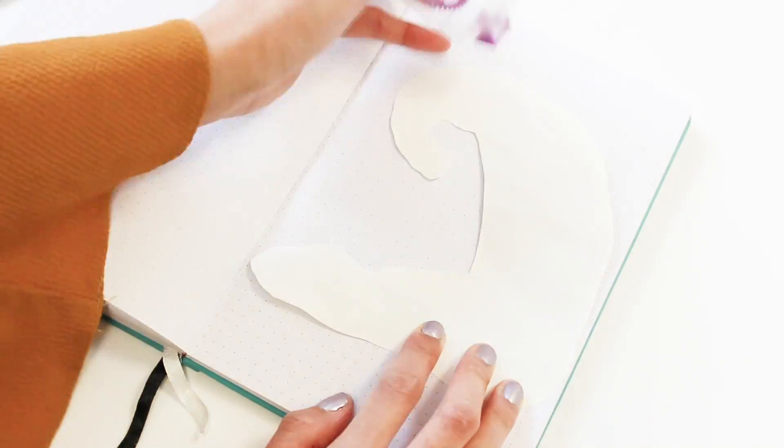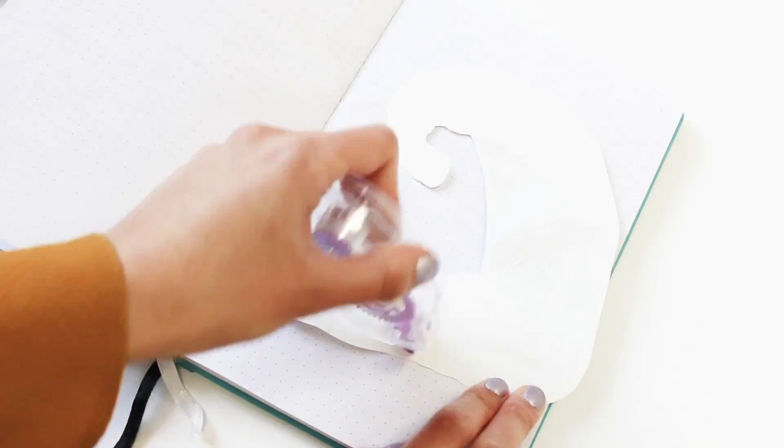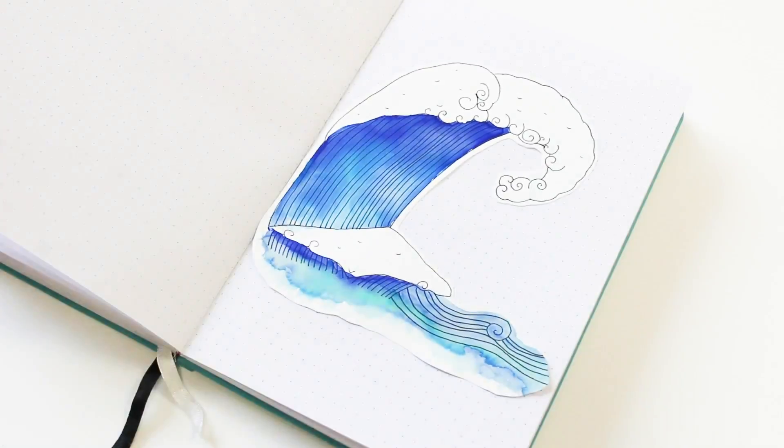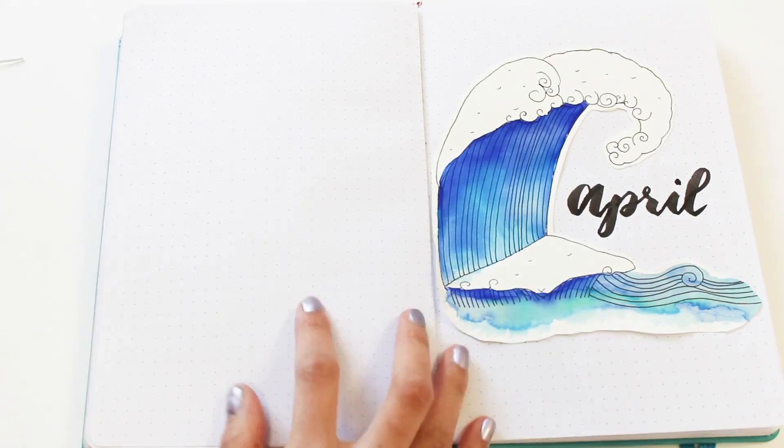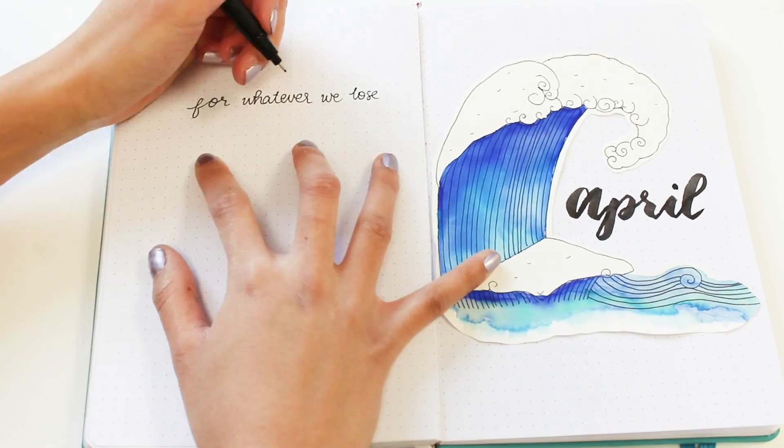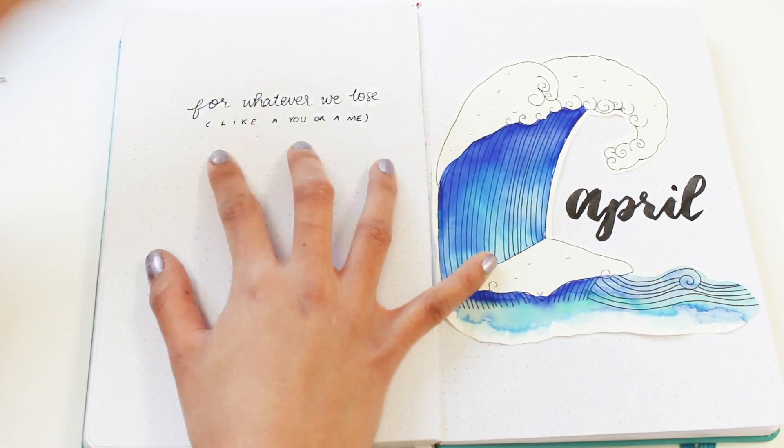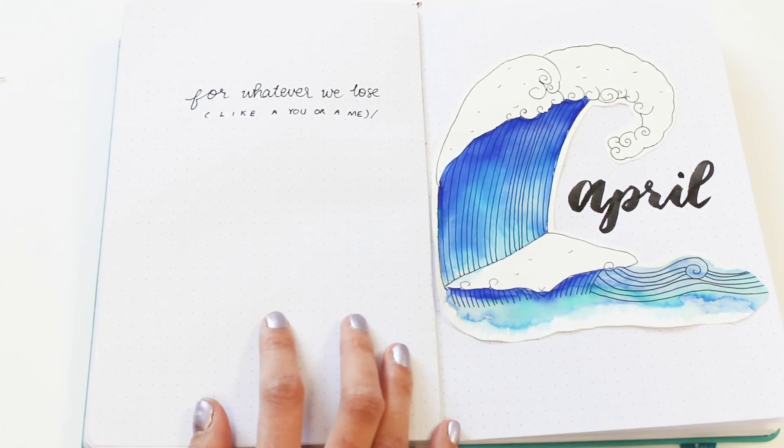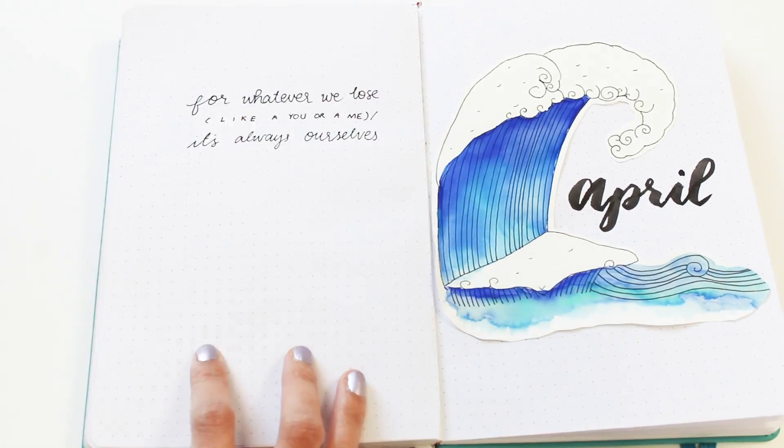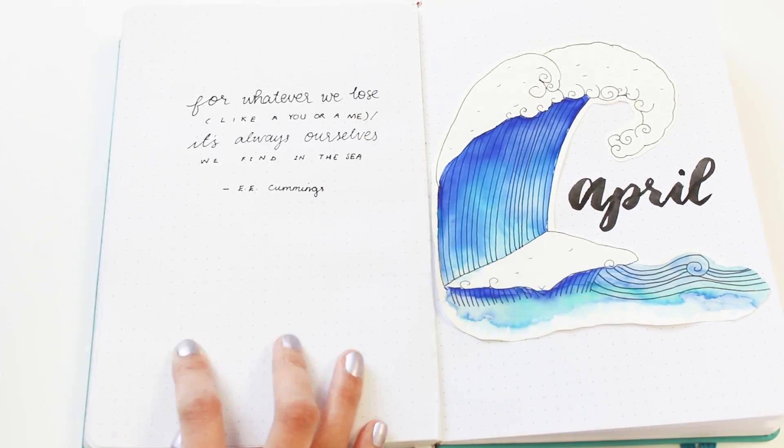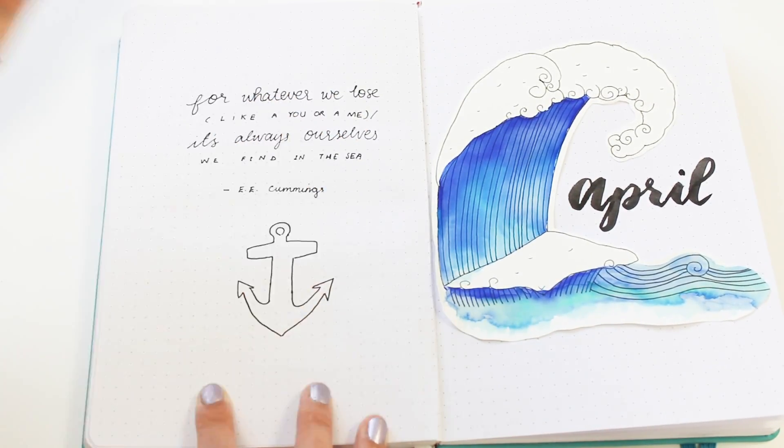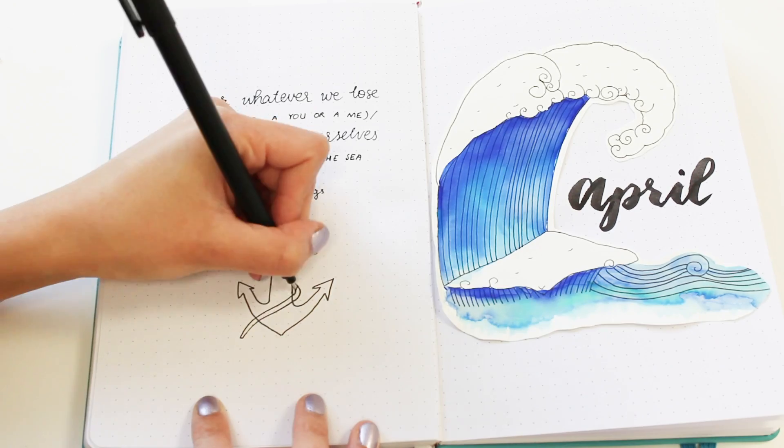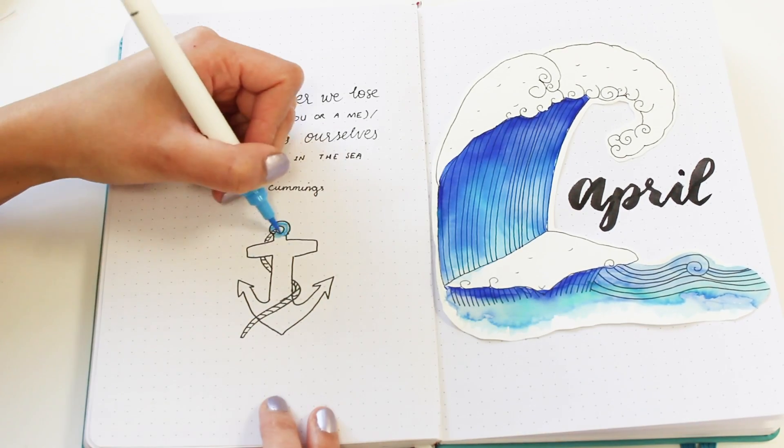I'm just cutting that painting out and sticking that on the cover with glue tape. Then I'm just writing April next to the wave. As usual, I'm writing a quote on the left-hand side of the spread, and the quote I chose for this month is 'for whatever we lose, like a you and a me, it's always ourselves we find in the sea,' which is a nice and fitting quote. I just really like E. E. Cummings poetry, so if you guys are interested in poetry, let me know your favorite poets in the comments below. I'd really love to check them out.